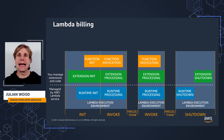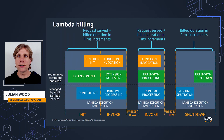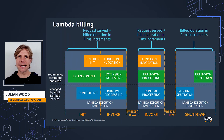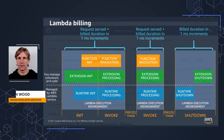Looking at Lambda billing now — extensions share the same billing model as Lambda. For invokes, you pay for the number of requests served and the combined compute time in 1ms increments. This is the total time that the function and all extensions run. For shutdown, there's no request — you just pay for the build duration.